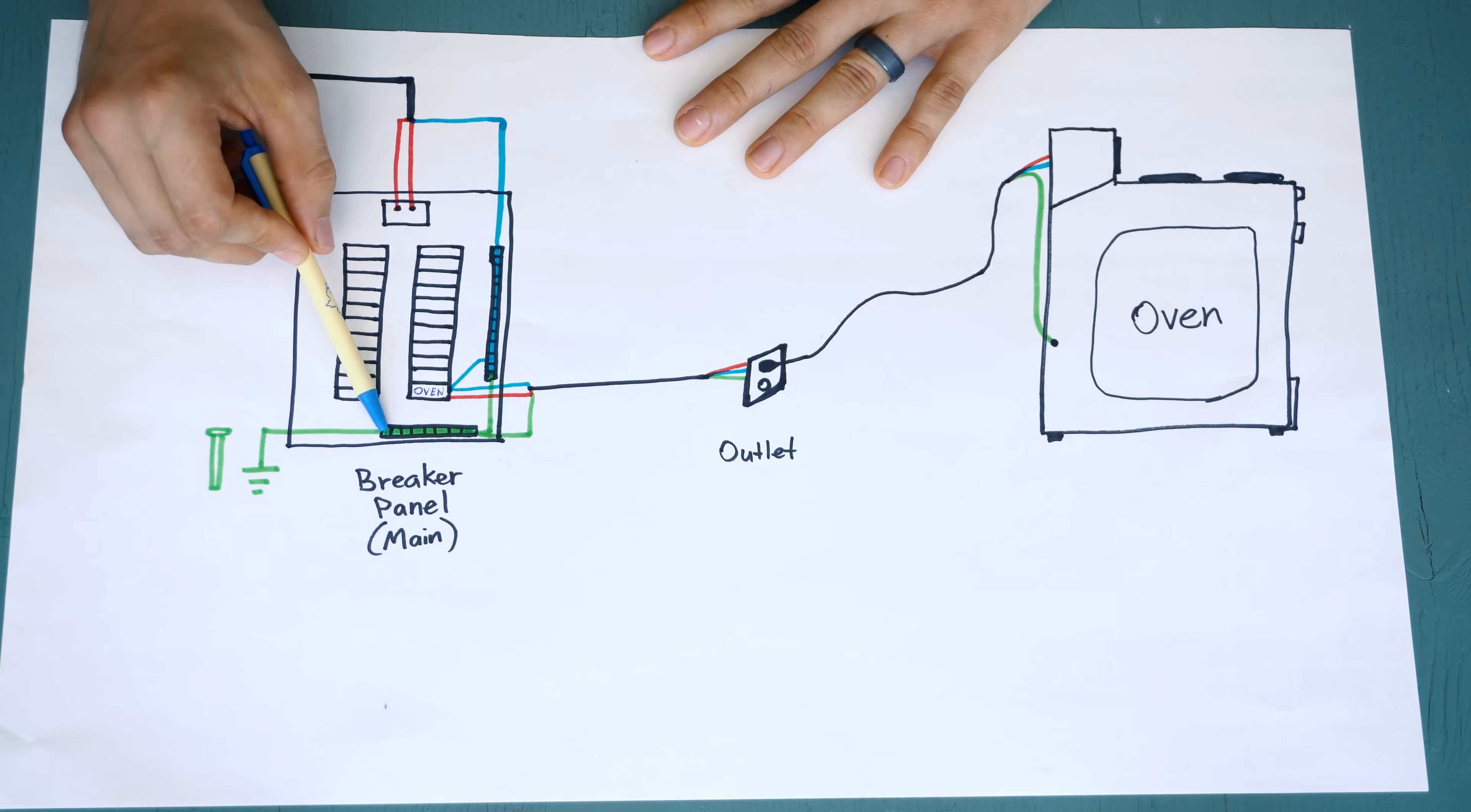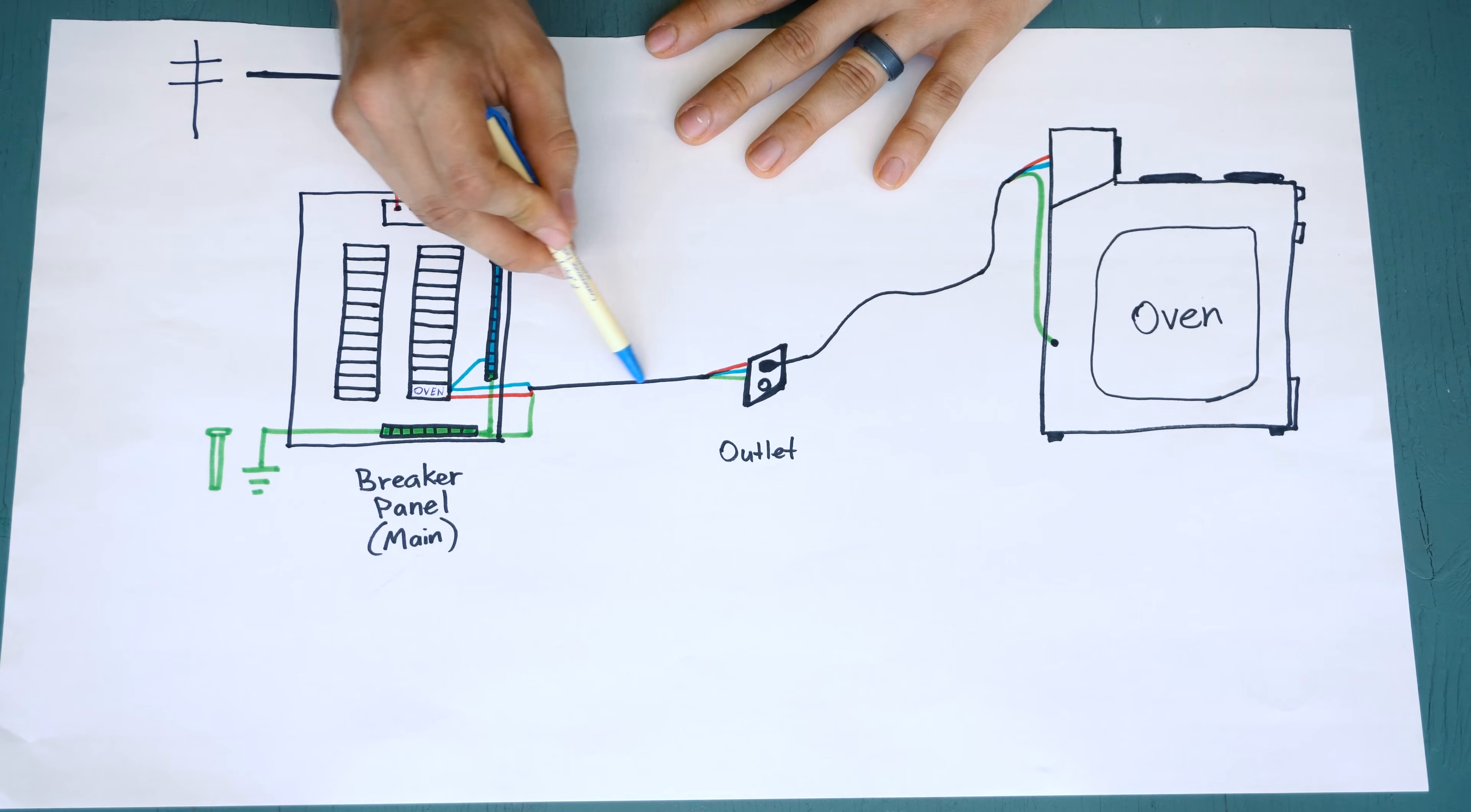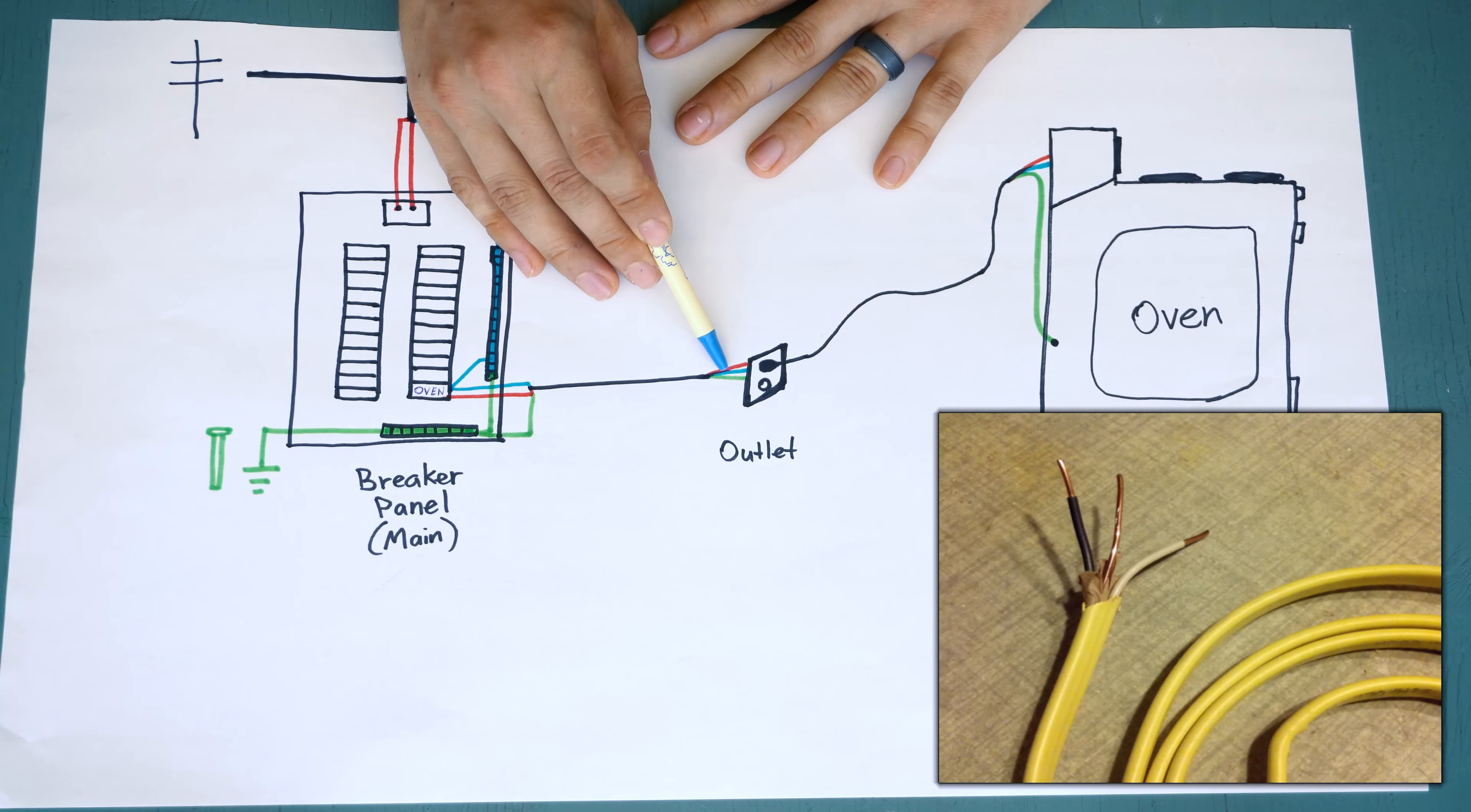The ground bus is connected to a ground outside, so it can be attached to a water pipe going into the ground, or it can go to a little grounding rod that is pounded into the ground. So here is our cable that is feeding power to the outlet, which our oven is hooked up to. This cable has three wires inside of it. It has a hot, a neutral, and a ground.